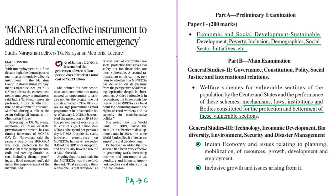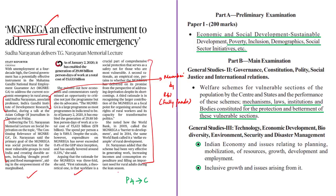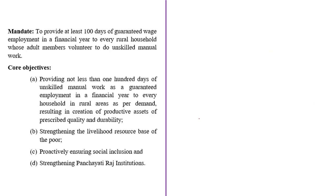This news article presents the opinion of an associate professor at the Indira Gandhi Institute of Development Research about the MGNREGA program. This institute is located in Mumbai, established by the Reserve Bank of India to carry out research on developmental issues from a multi-disciplinary point of view, and is fully funded by the RBI. MGNREGA stands for Mahatma Gandhi National Rural Employment Guarantee Act. This program came into force on 2nd February 2006, with a mandate to provide at least 100 days of guaranteed wage employment in a financial year.